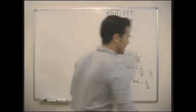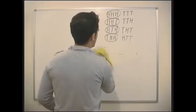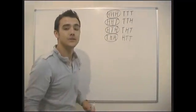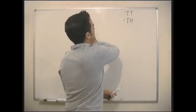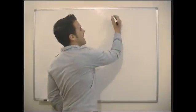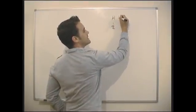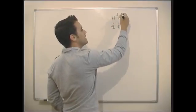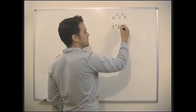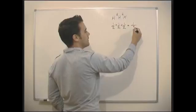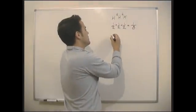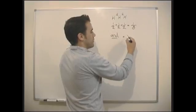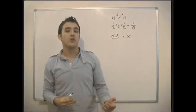We don't want to list all outcomes every single time — it would be a nightmare for eight coin tosses. So we need a rule. The probability of getting heads is one half, and heads again is another half, and heads again is another half. For heads AND heads AND heads, we multiply the probabilities together: one half × one half × one half = one in eight. So when we have an AND in probability, it means we multiply.